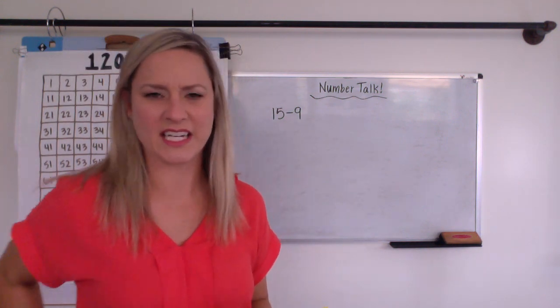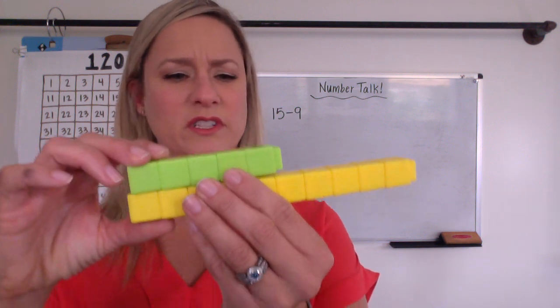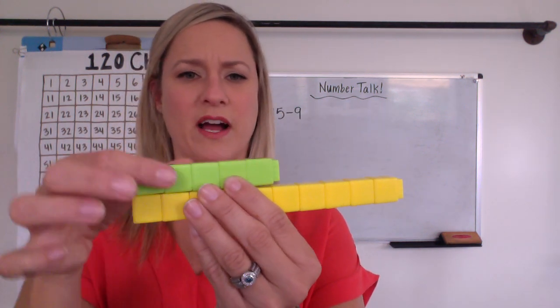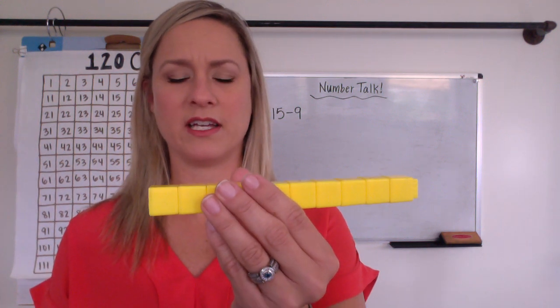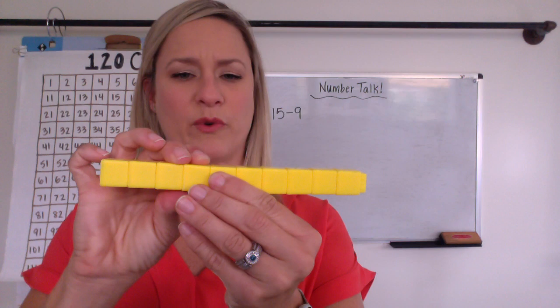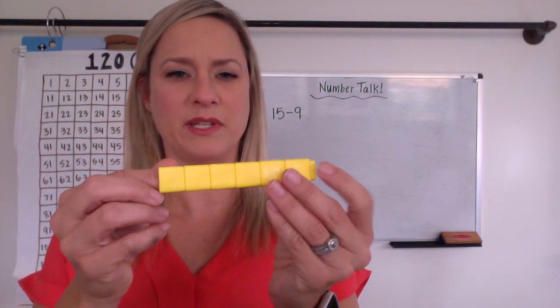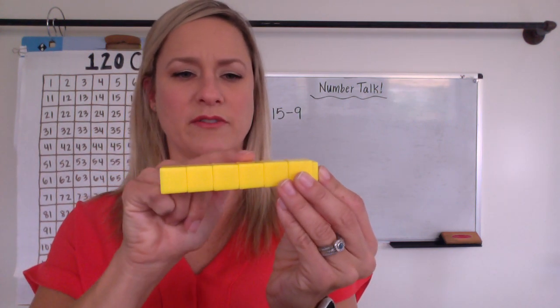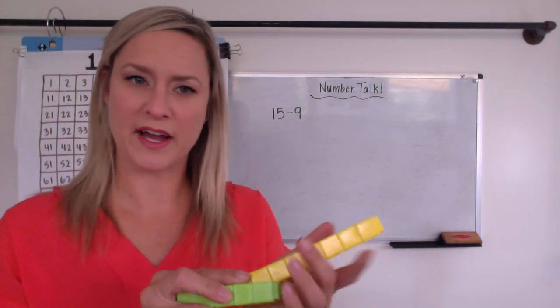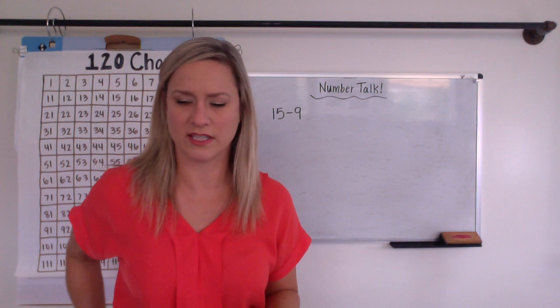So 15 minus 9 would look something like 15 minus, well, we know that's 5, so minus 5, minus 6, 7, 8, and that's the ninth one I'm taking off. So my answer would be 1, 2, 3, 4, 5, 6. So maybe we could draw that out to show our thinking, right? Okay, so let's do that.